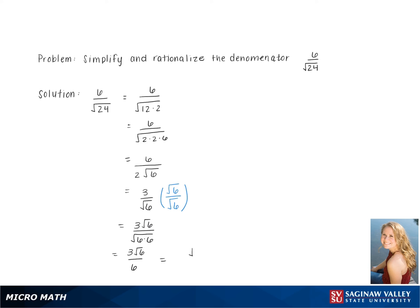Simplifying gives us 3 square root 6 over 6. Then we divide 3 by 6, giving us 1 half, leaving us with a final answer of square root 6 over 2.